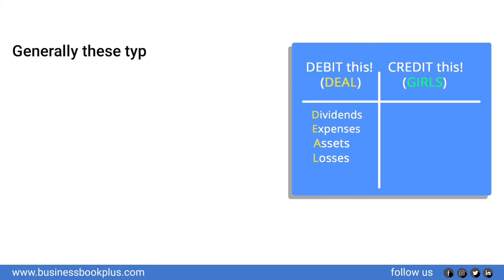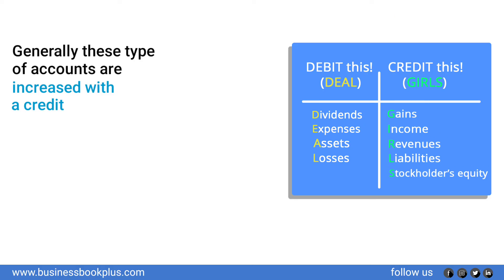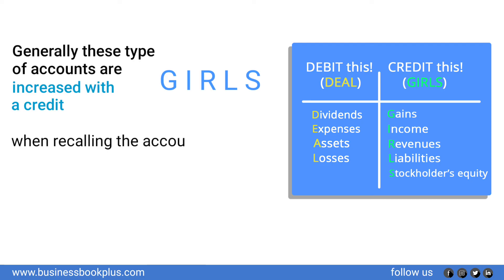Generally, these types of accounts are increased with a credit: gains, income, revenues, liabilities, and stockholders' equity. You might think of GIRLS when recalling the accounts that are increased with a credit.